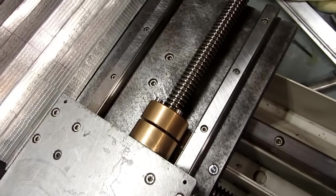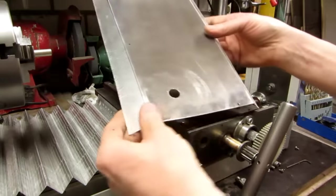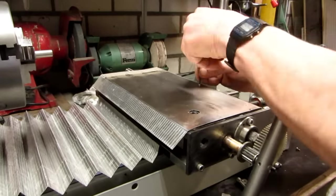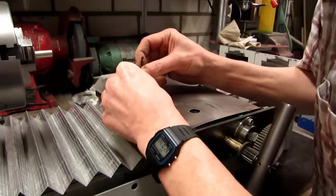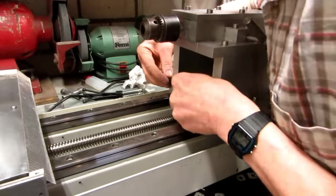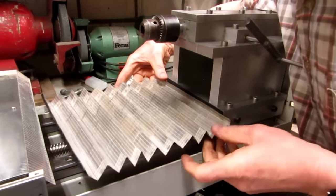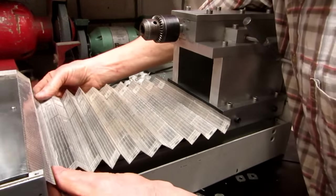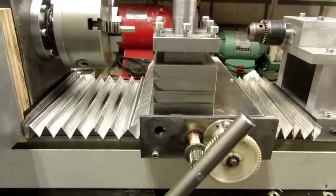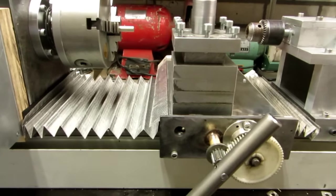The cross-slide lead screw and linear rails should also be protected, so I added a thin protection sheet as well. For the other side of the carriage I made a harmonica sheet as well. Now the lead screw and rails are well protected from metal chips.